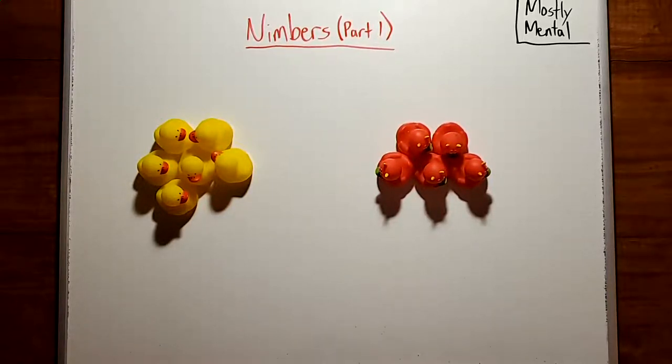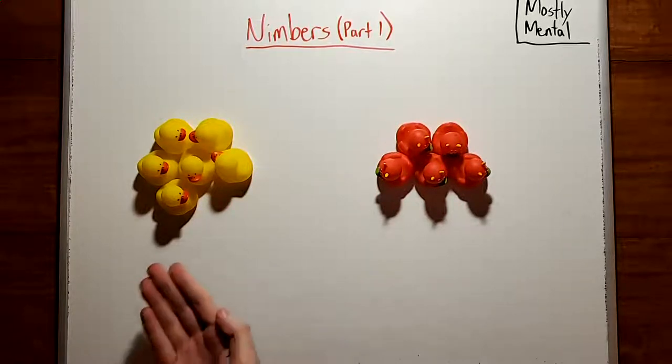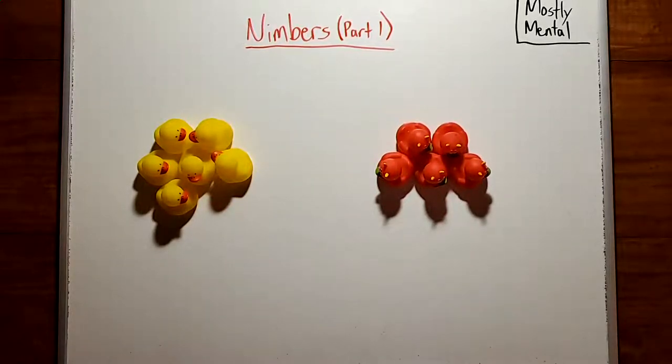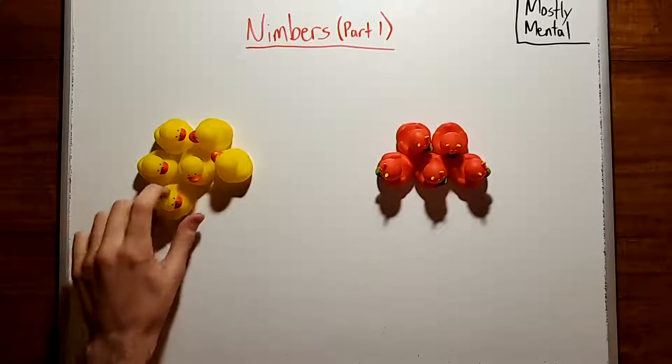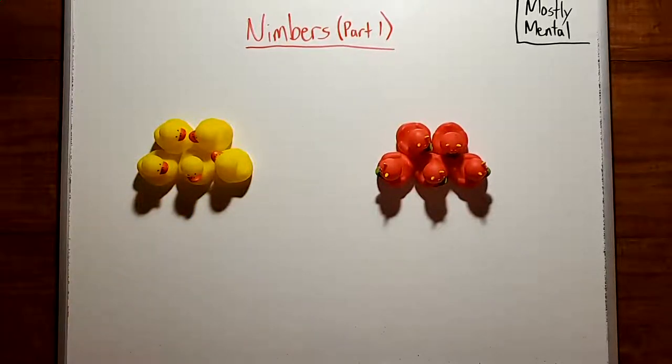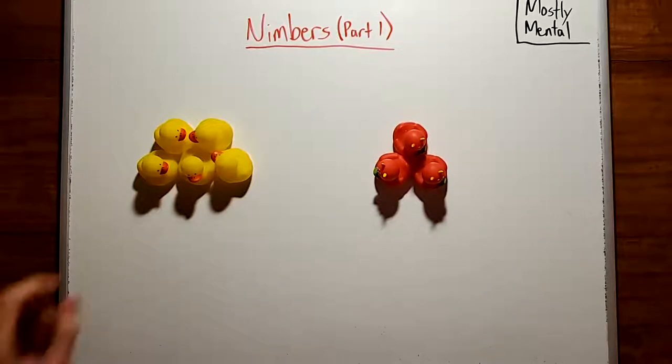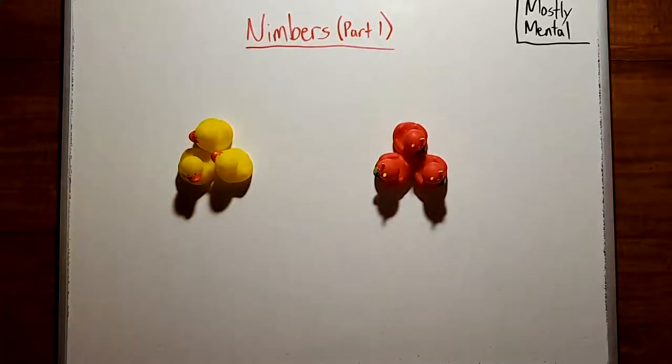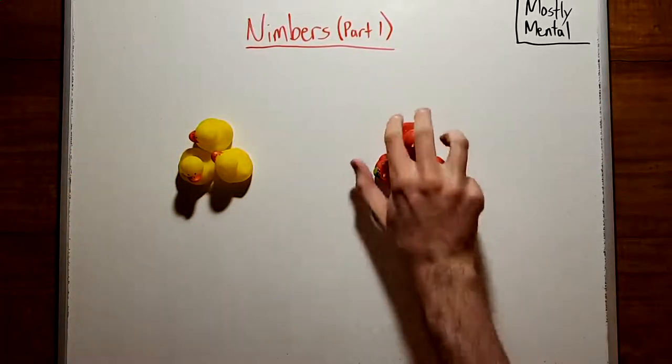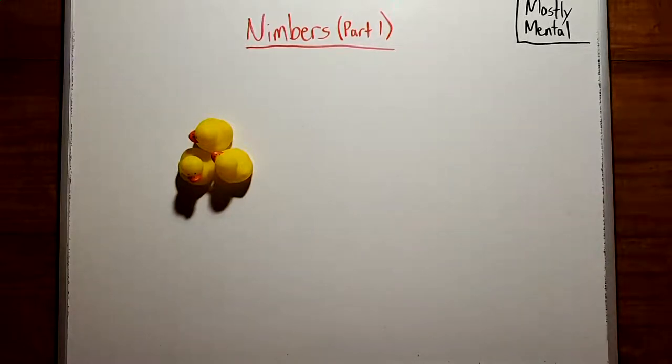We'll start with an observation. If we have a game of Nim with two piles, there's a natural strategy: make the piles equal. Then whatever the opponent does in one pile, we can mirror in the other. So when the opponent eventually empties one pile, we can empty the other and win.